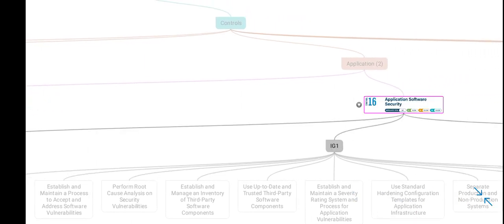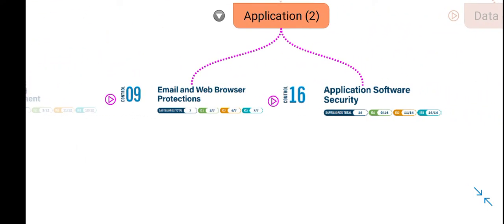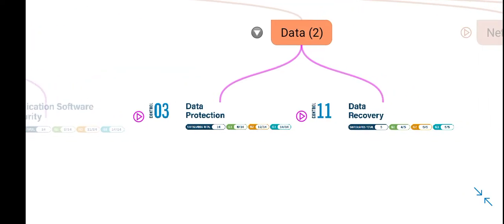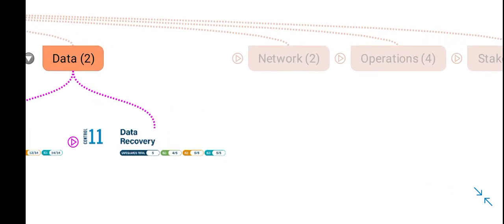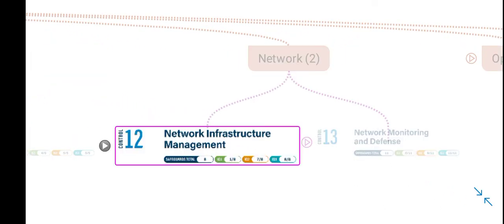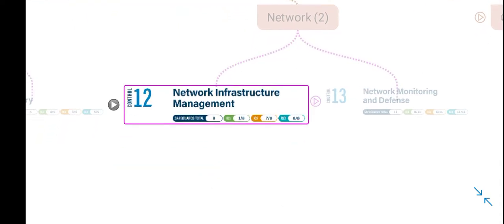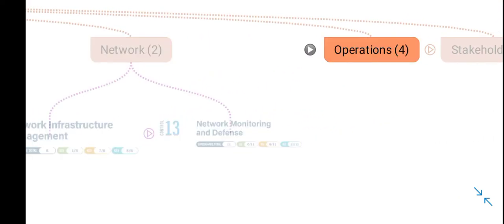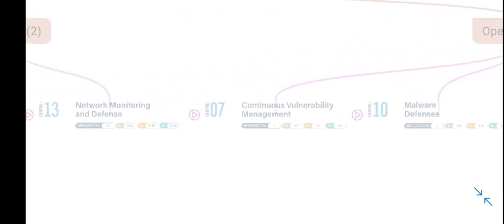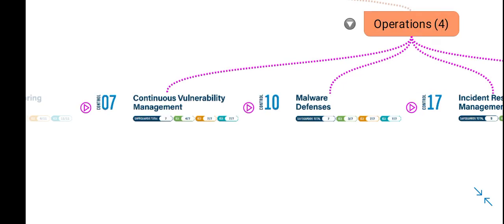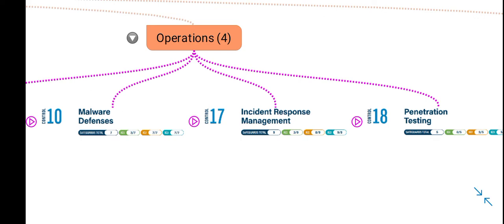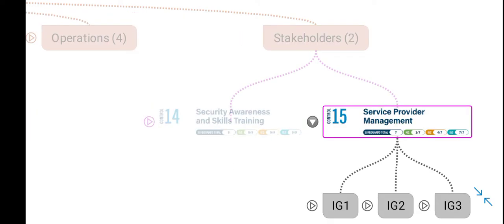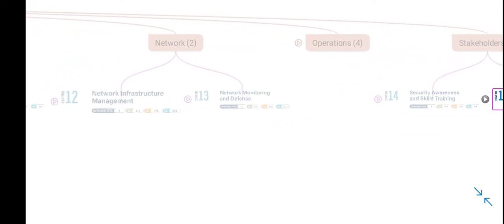In application security, there are a total of 2 controls — email and web browser protection, and application software security. In data, there are 2 controls — data protection and data recovery. In network, there are 2 controls. In security operations, there is continuous vulnerability management, malware defenses, incident response, and penetration testing. And with regards to stakeholder, there are 2 controls. So in total, these are 18 controls.